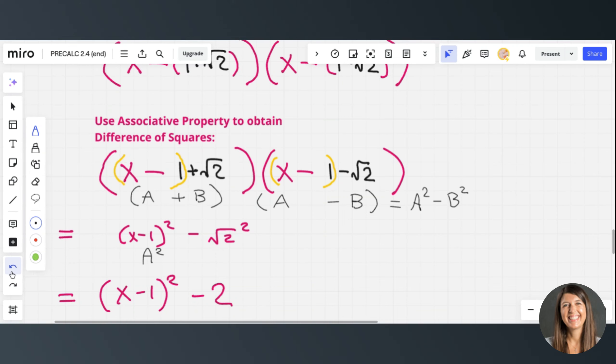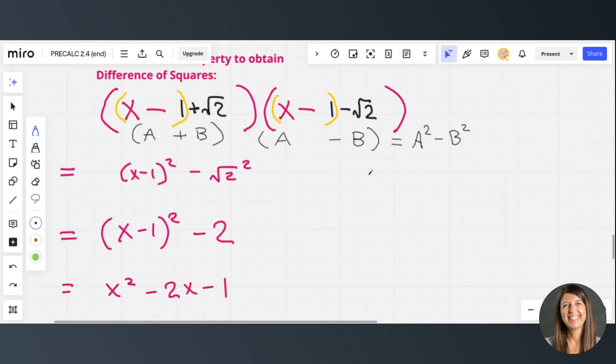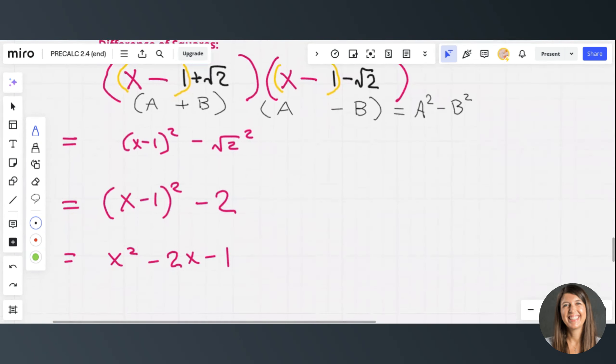And if I simplify that, I'm going to get x minus 1 squared minus, now square root of 2 squared is just 2. That's where that 2 comes from.